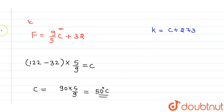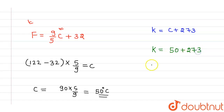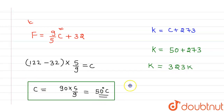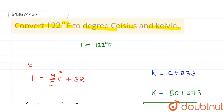Now if I try to find out the same temperature in Kelvin, it comes out to be 50 plus 273, which gives K equals 323 Kelvin. So these are the temperatures in degrees Celsius and Kelvin. I hope you understood. Thank you.